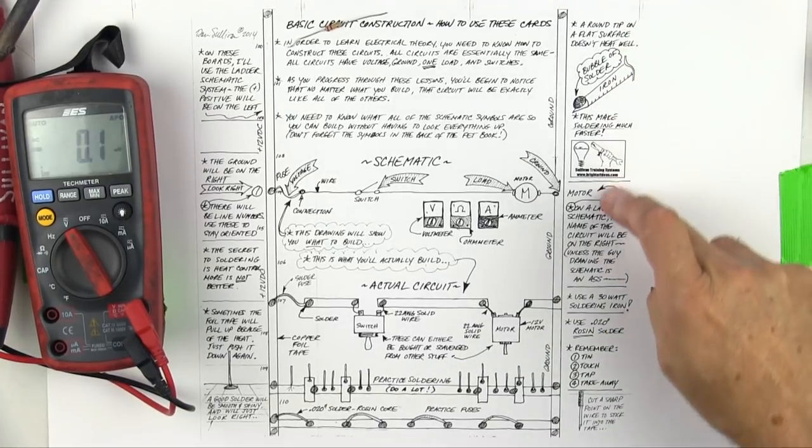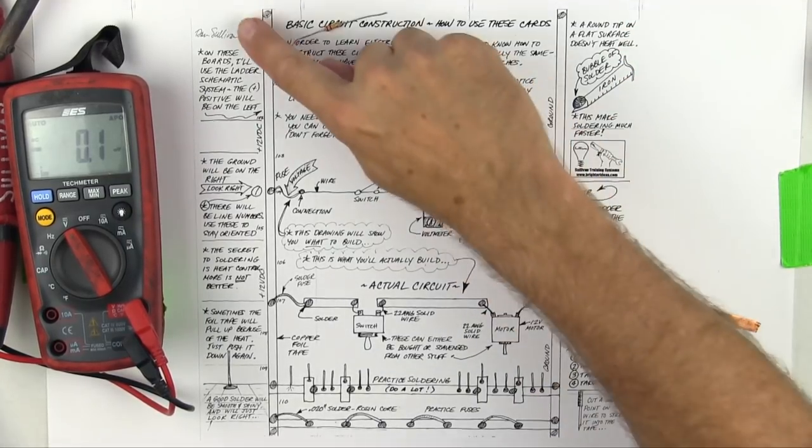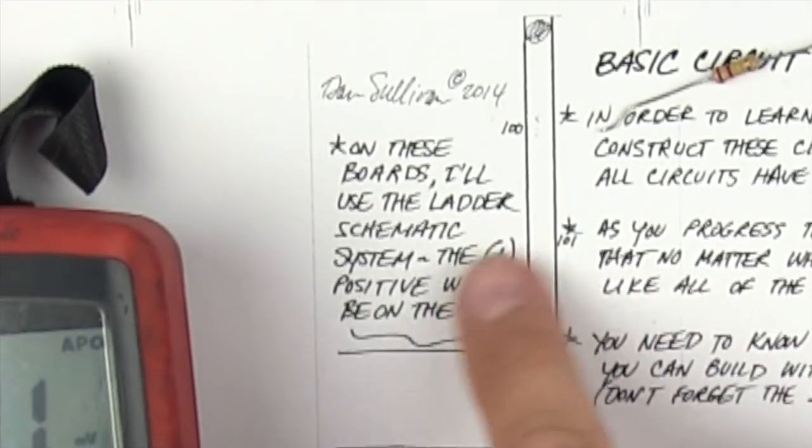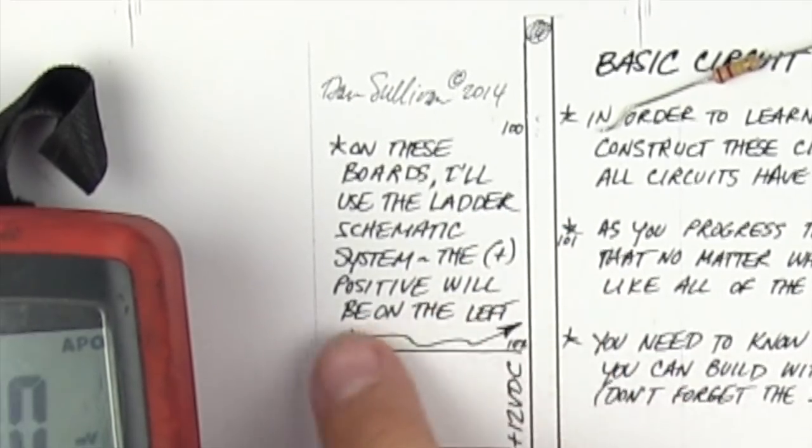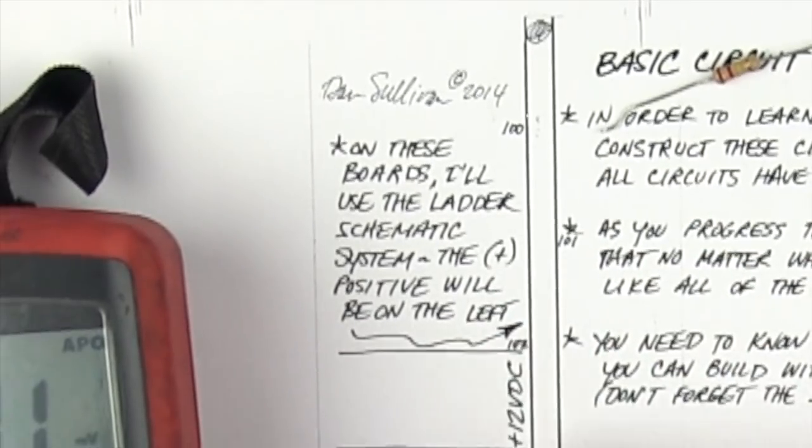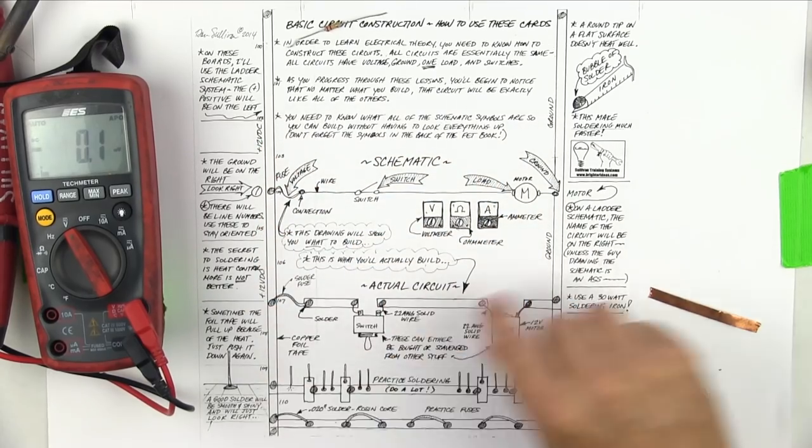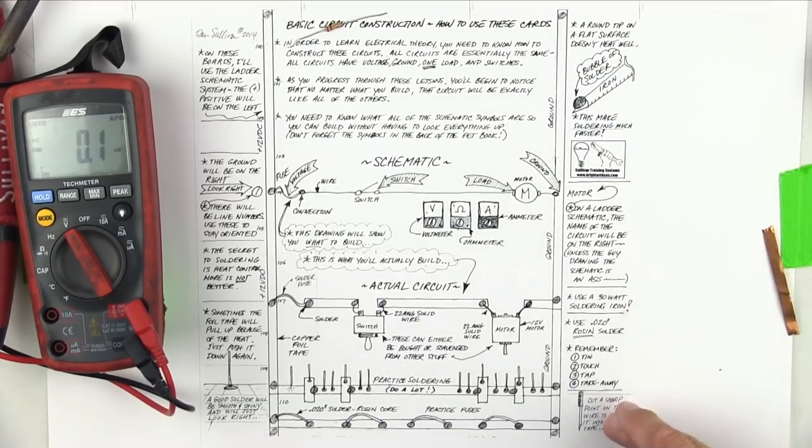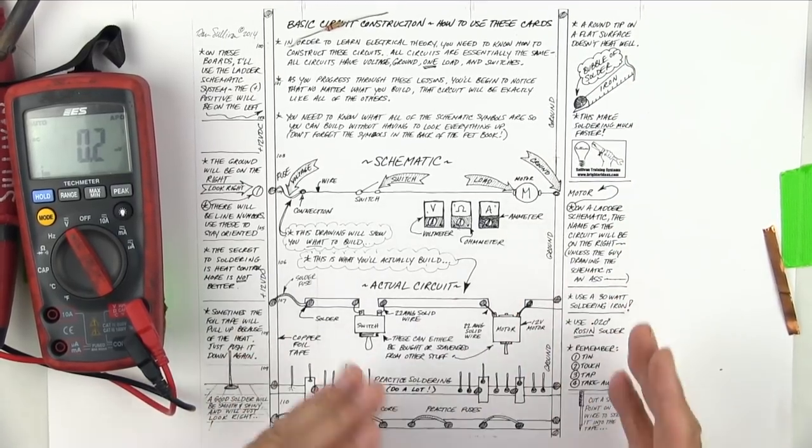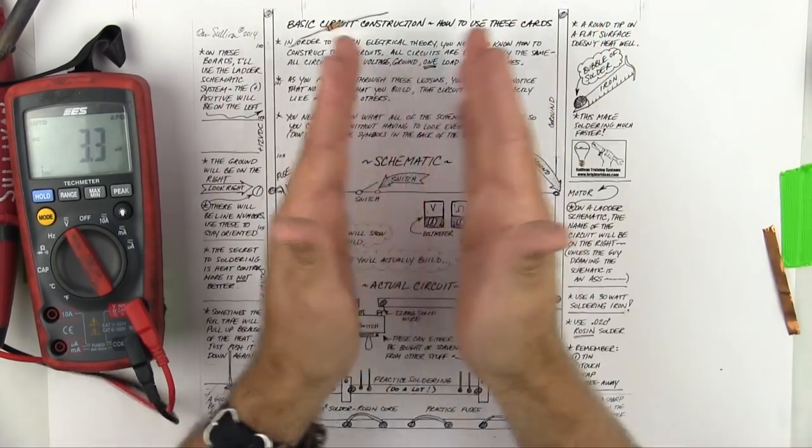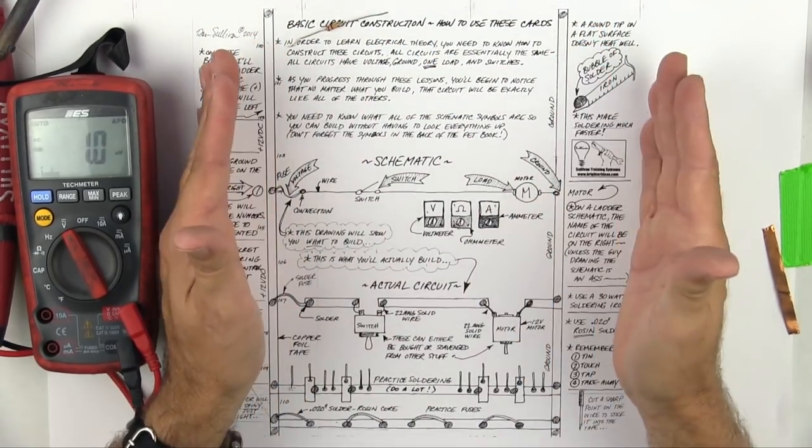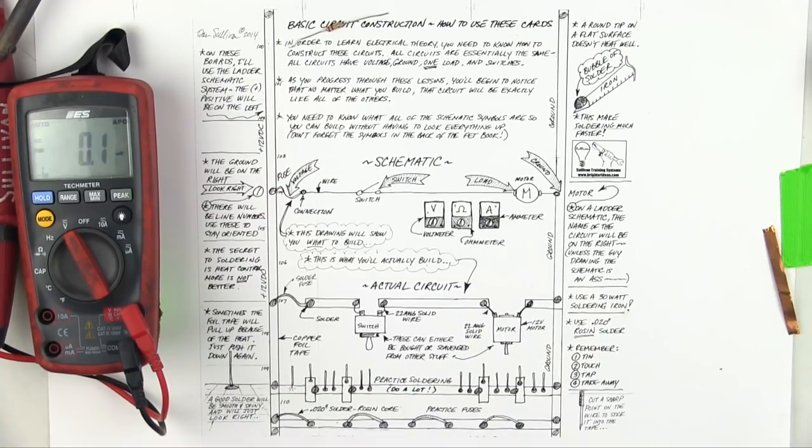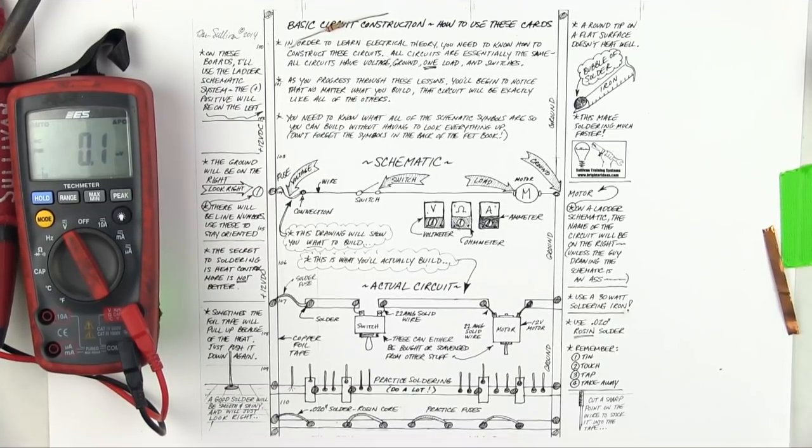The notes on the outside are just sort of general notes. On these boards, I'll use a ladder schematic system—the plus or positive will be on the left. So all of the notes, the general learn these thing notes, are going to be on the outside. So building instructions will be in the middle and general notes will be on the outside edge.